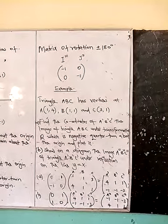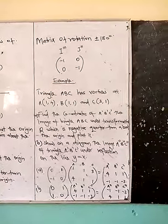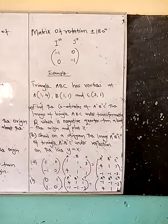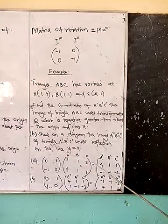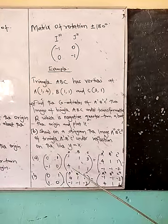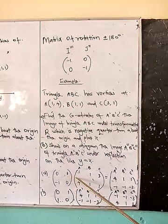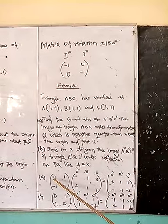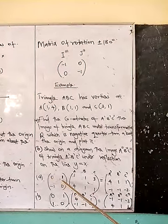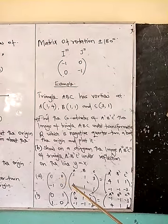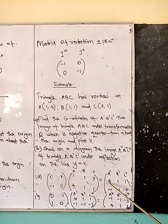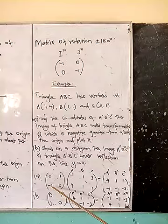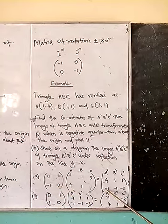When we multiply, we use the rule of row by column, as we learned in matrix multiplication. To obtain A prime: row 1 times column gives 0×1 + 1×4 = 4, and row 2 times column gives 1×(−1) + 0×4 = −1. So A prime has coordinates (4, −1).